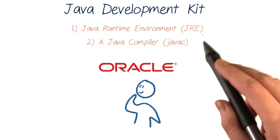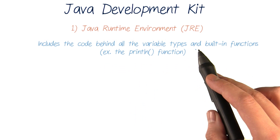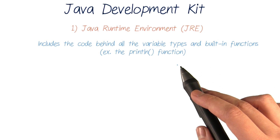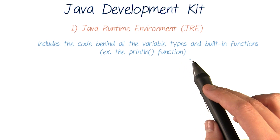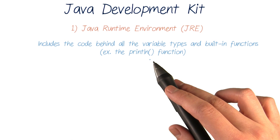The first is the Java Runtime Environment. The Java Runtime Environment includes the code behind all the variable types and functions that Java has built in, like the println function.